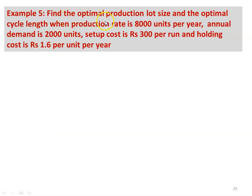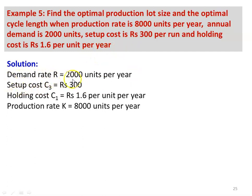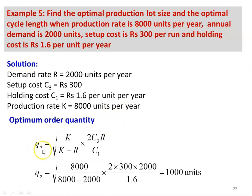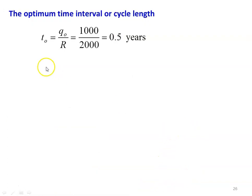Example 5: Find the optimal production lot size and optimal cycle length. Production rate k = 8000 units per year, annual demand r = 2000 units, setup cost c3 = rupees 300 per run, holding cost c1 = rupees 1.6 per unit per year. Optimum order quantity q_o = sqrt(8000/(8000 minus 2000) × 2 × 300 × 2000/1.6) = 1000 units. Optimum cycle length t_o = q_o/r = 1000/2000 = 0.5 years.